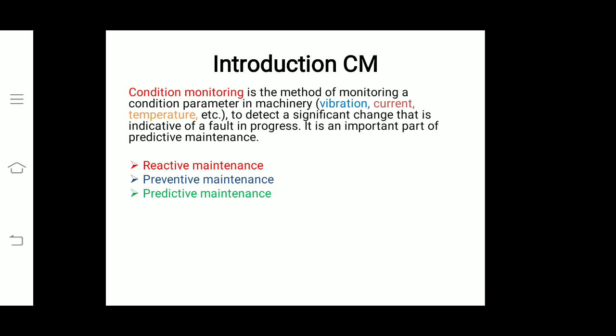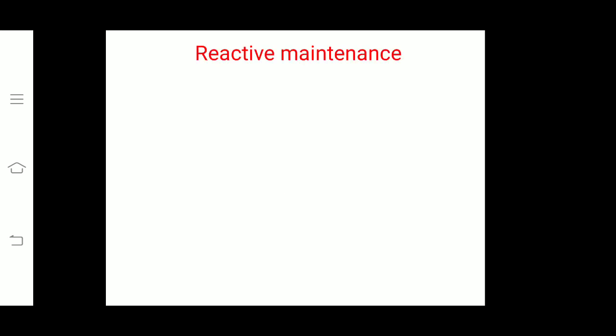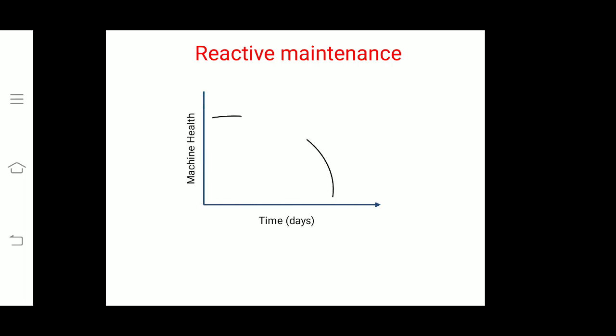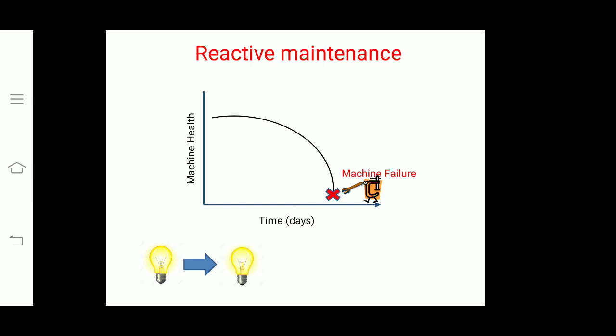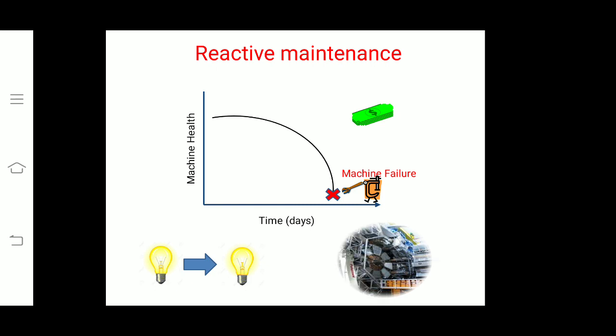The maintenance options are reactive maintenance, preventive maintenance, and predictive maintenance. In reactive maintenance, the machine is used to its limits and repair is performed only after the machine has failed. Take an example: if a light bulb gets damaged and fuses, the first thing you do is go to the market, get a new one, and replace it. This makes sense with a low initial investment, like a bulb.